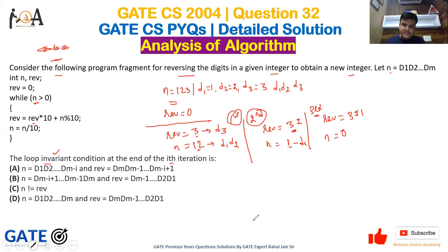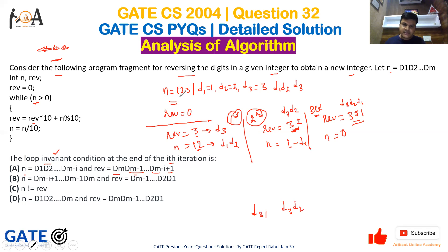Looking at the pattern: the value of rev starts as d3, then becomes d3 d2, then d3 d2 d1 — in general it is dm, dm−1, ... and so on. The value of n goes from d1 d2 d3, to d1 d2, to d1, following the same pattern. This matches option A, so option A is clearly the correct answer for the loop invariant condition of this program fragment.